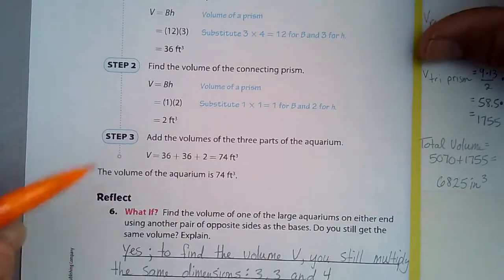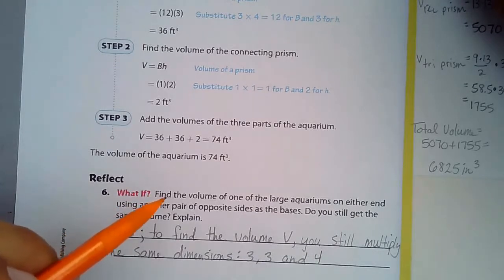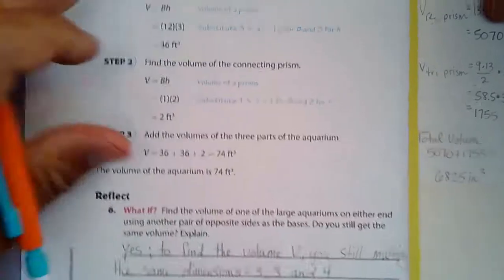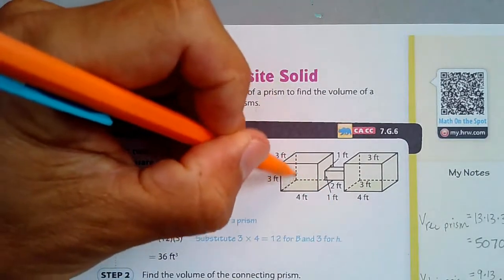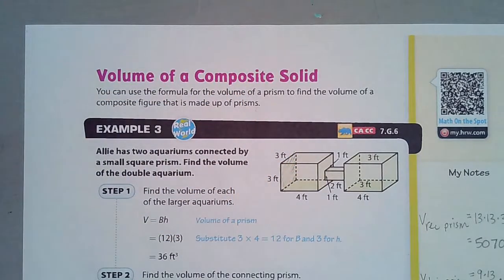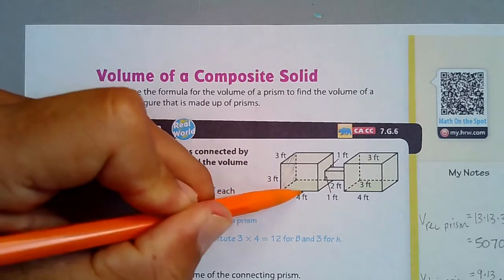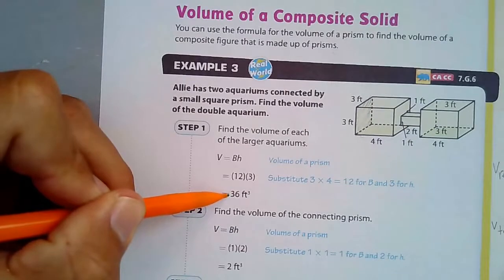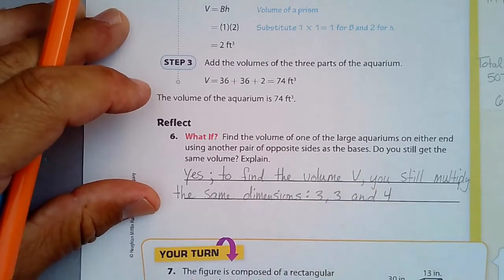What if you find the volume of one of the large aquariums using a different pair of opposite sides as the base? On a rectangular prism, you can choose a different base and still get the same answer. Using this face: the base area is 3 times 3 equals 9, and the height becomes 4. So 9 times 4 is still 36 — the same volume. You always multiply the same three dimensions: 3, 3, and 4.